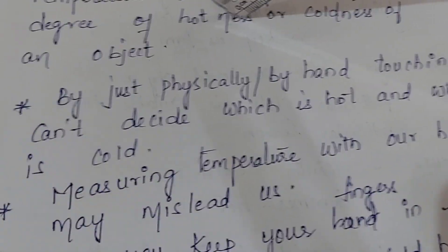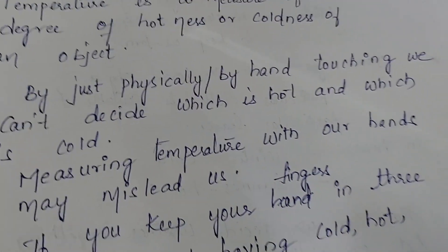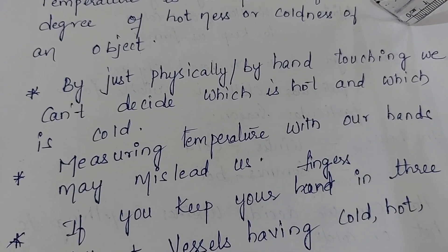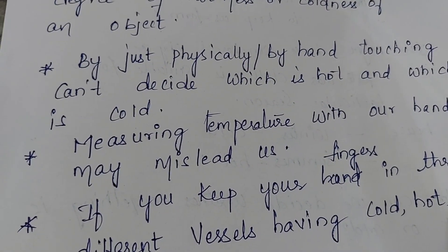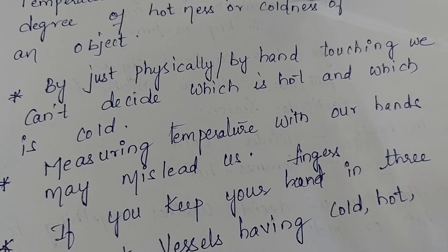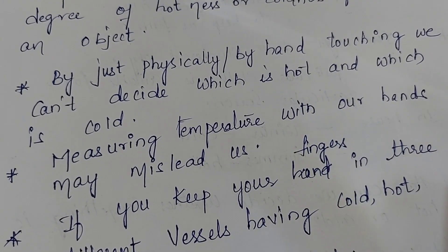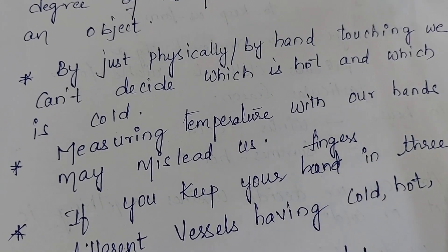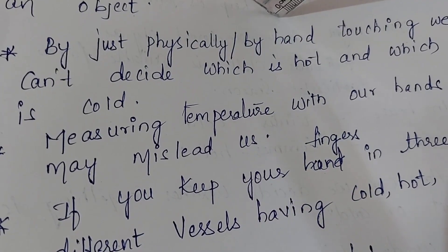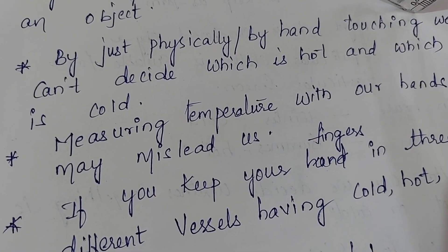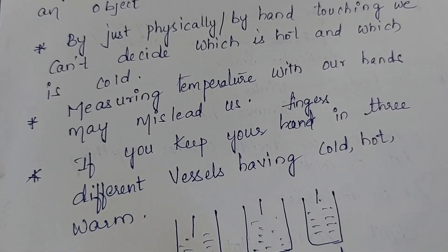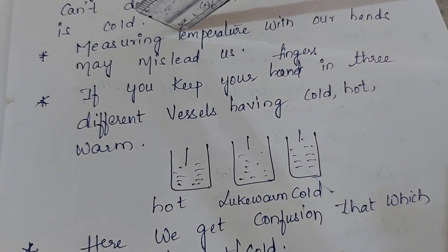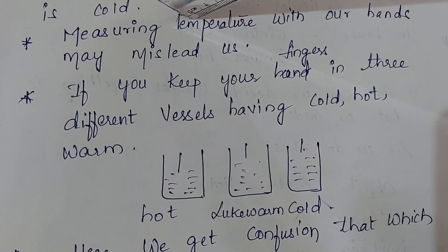Temperature measures how much hot or how much cold an object is. If you keep a thermometer in ice cream or in hot water, the degree reading is called temperature — it is the degree of hotness or coldness of an object. Just by physically touching with our hand we can't decide which is hot and which is cold correctly; measuring temperature with our hands may mislead us.